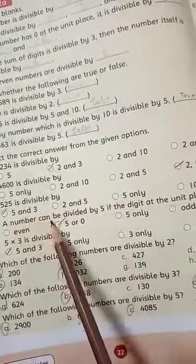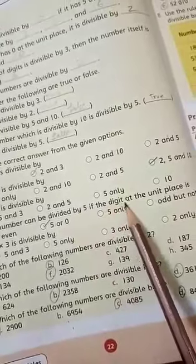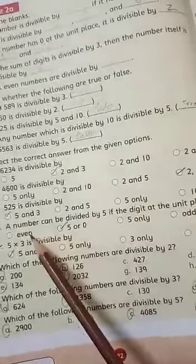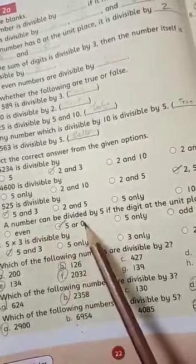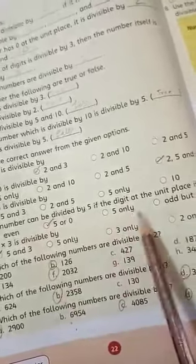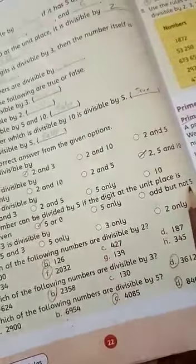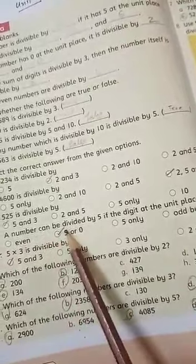A number can be divided by 5 if the digit at the unit place is even, 5 or 0, 5 only, odd but not 5. The correct option is option B.